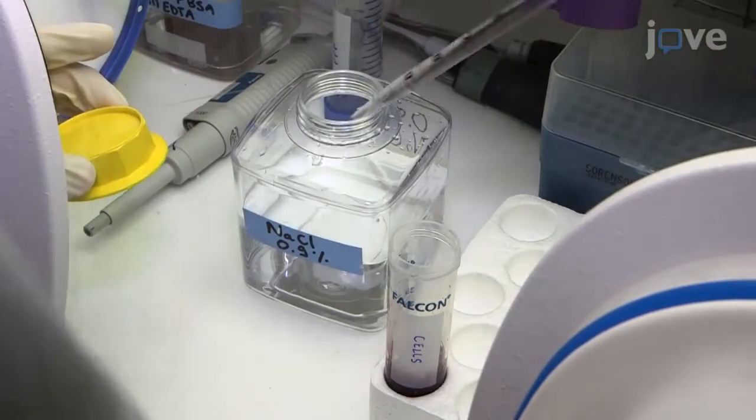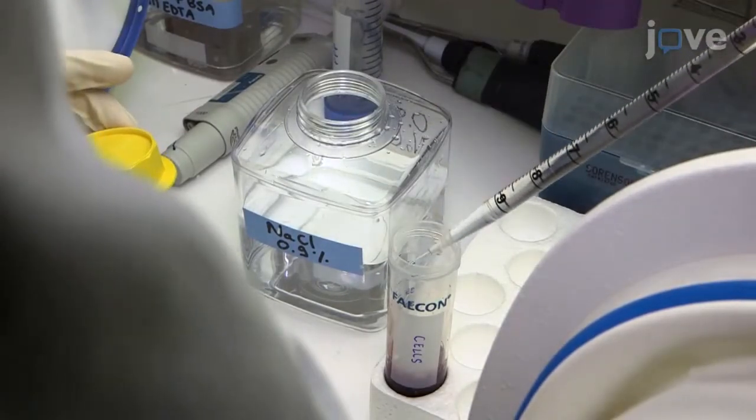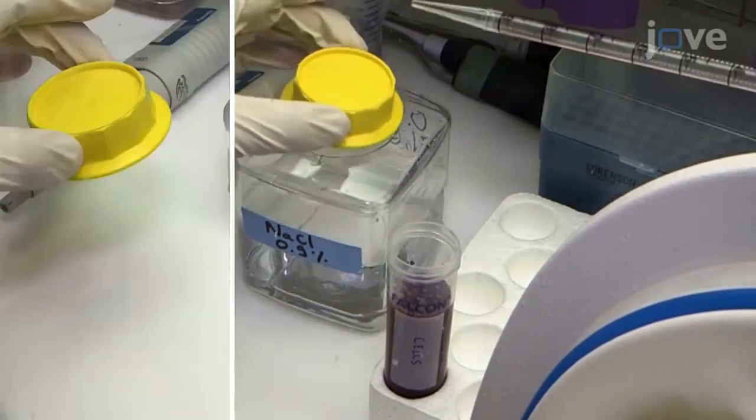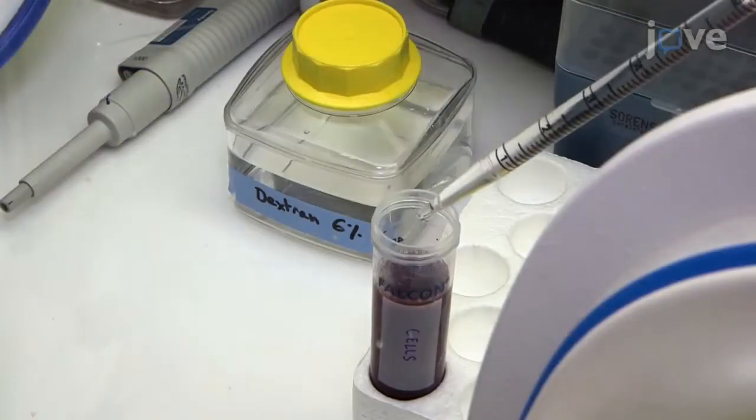Then, add 0.9% sodium chloride solution until the total volume reaches 44 mL, and add 6 mL of 6% dextran.